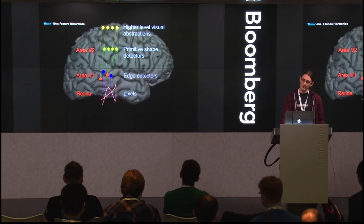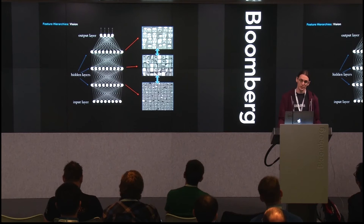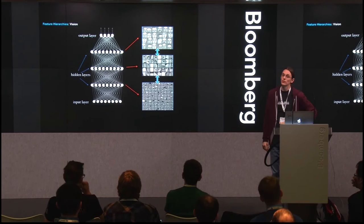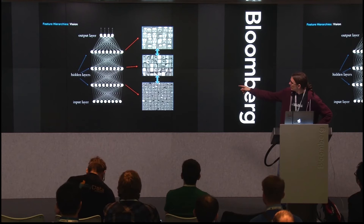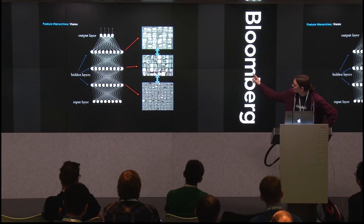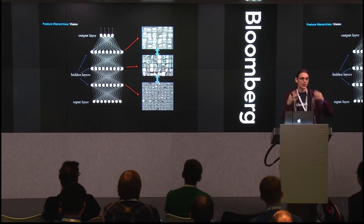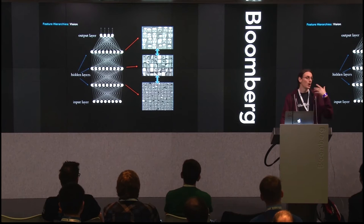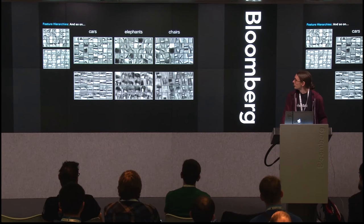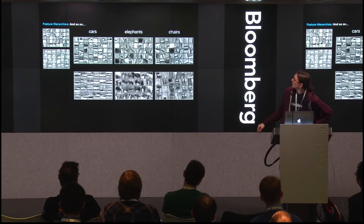In deep learning, we have very simplistic versions of neurons with values between zero and one. This is the internal representation of a network trained on faces — all these filters show what the neurons have learned to represent. In the lowest layer, we see edges. Combining those gives intermediary representations like eyes or noses. Using those together, we arrive at full faces. The same architecture applied to different domains learns to represent cars, elephants, chairs — all in this hierarchical fashion.